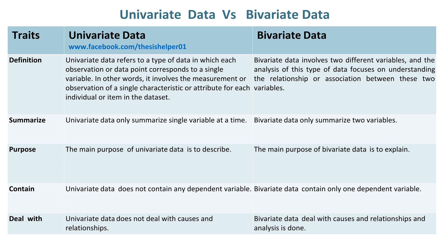Univariate Data does not contain any dependent variable. Whereas, Bivariate Data contains only one dependent variable. Univariate Data does not deal with causes and relationships. Whereas, Bivariate Data deals with causes and relationships, and analysis is done to examine them.